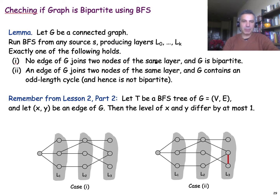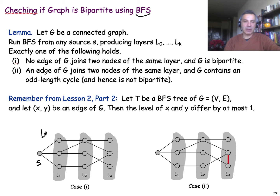Now that we've established that bipartite graphs cannot include any odd-length cycles, we can give an algorithm to check if a graph is bipartite. The algorithm is simple: traverse the graph using BFS from any source node. BFS will place nodes in successive layers — layer 0, layer 1, layer 2, layer 3, and so on. The only change we need is to assign alternating colors to successive layers: the source is blue, layer 1 is red, layer 2 is blue, layer 3 is red, and so on.